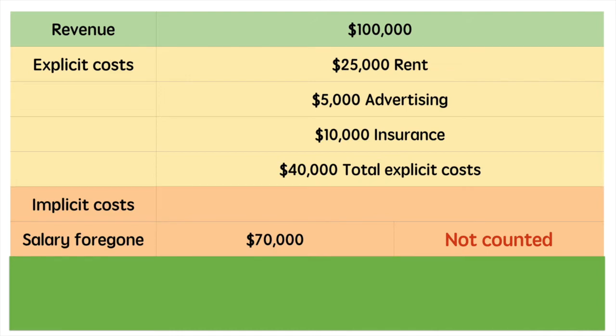Here is where economists and accountants differ. The implicit costs are considered by the economist but not the accountant. Implicit costs are the opportunity costs of using self-owned resources in production. In this example, it would be the salary foregone by Sam's use of her time to run this business.